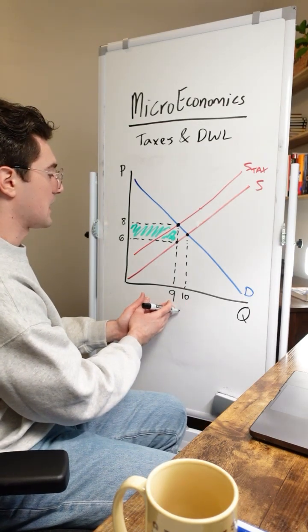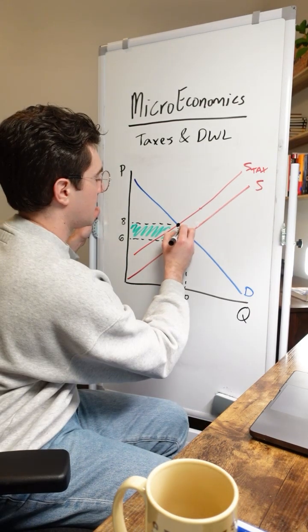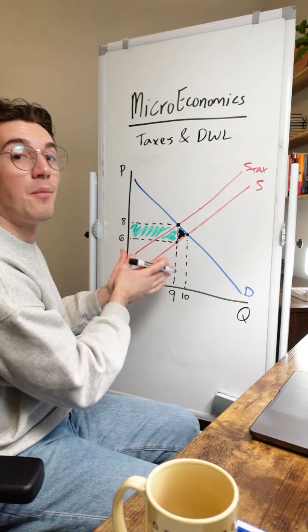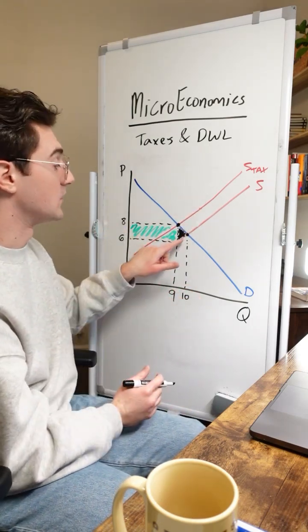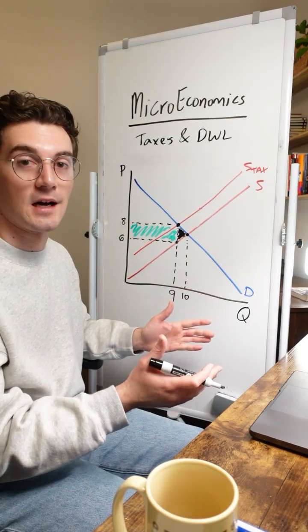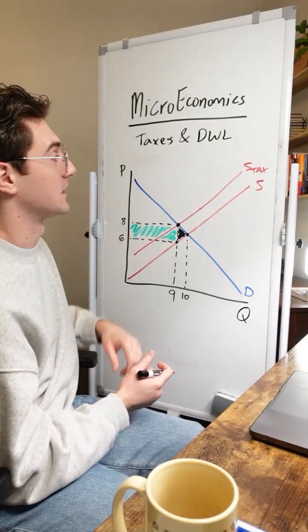But with this tax pulling back output to nine units, this black triangle is essentially evaporated surplus, deadweight loss as a result of the tax. This used to be surplus, and now it's not. We lost it by this tax getting applied.